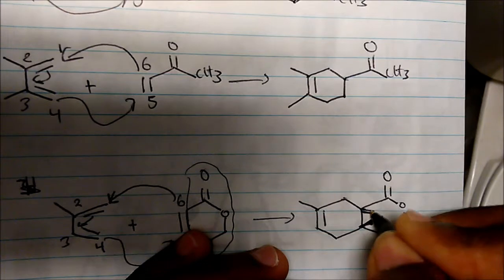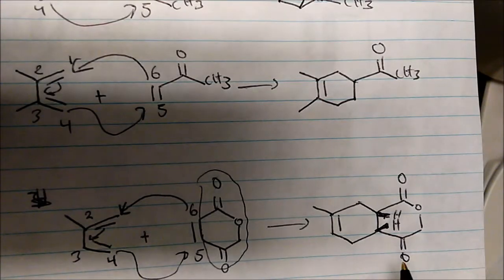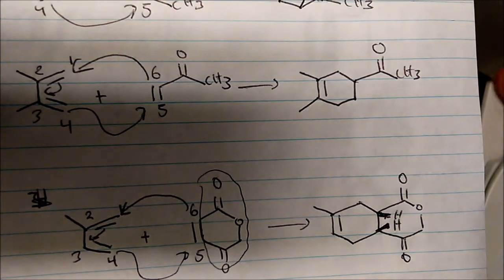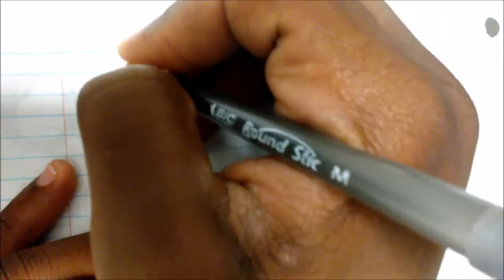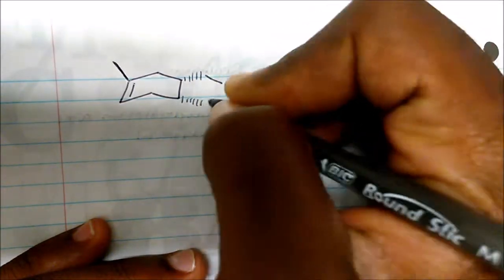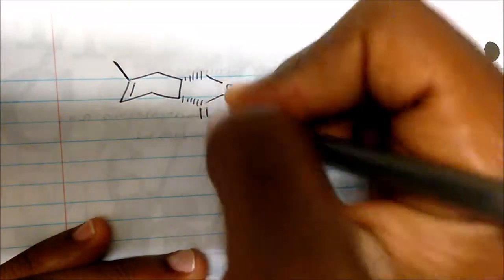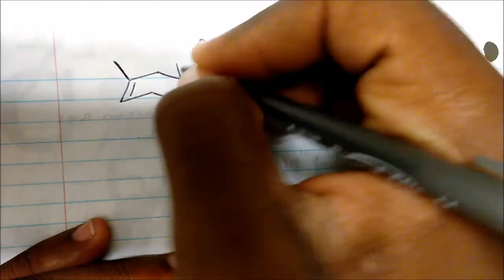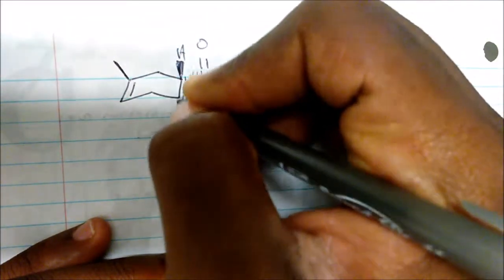These reactions occur with syn addition of the hydrogens, so the hydrogens are going to be on the same side. In terms of stereochemistry, the hydrogens are on the same side. We can draw a 3D structure of this molecule to emphasize stereochemistry: we have a double bond between two and three, we have our methyl group, we have our ketone group, and we show our hydrogens in syn addition.